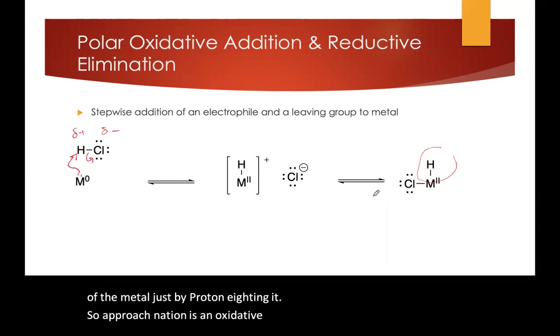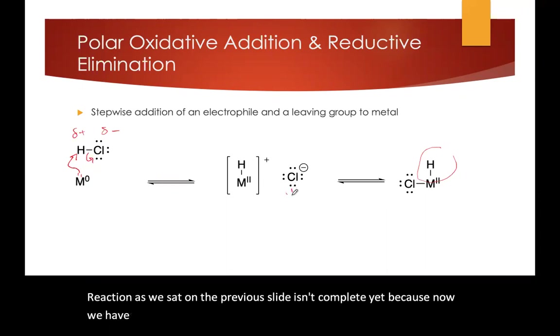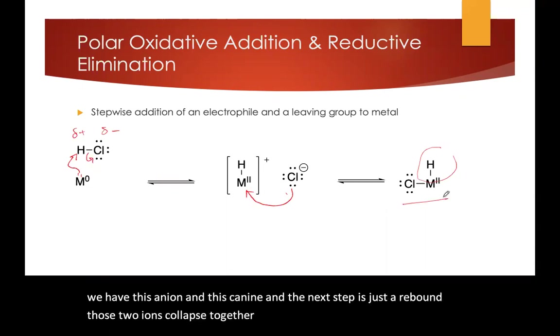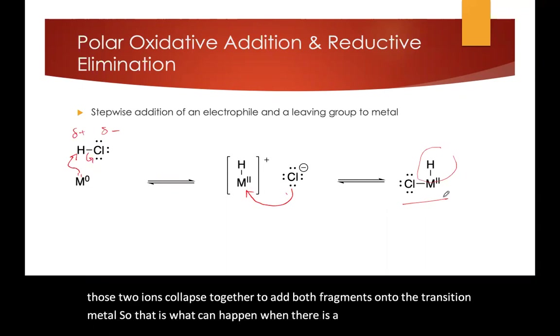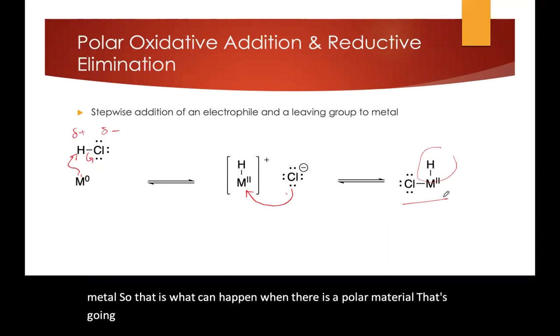But the reaction as we saw on the previous slide isn't complete yet because now we have this anion and this cation. And the next step is just a rebound. Those two ions collapse together to add both fragments onto the transition metal. So that is what can happen when there's a polar material that's going to react with the transition metal.